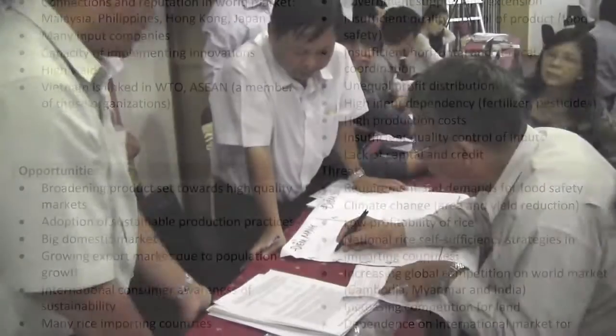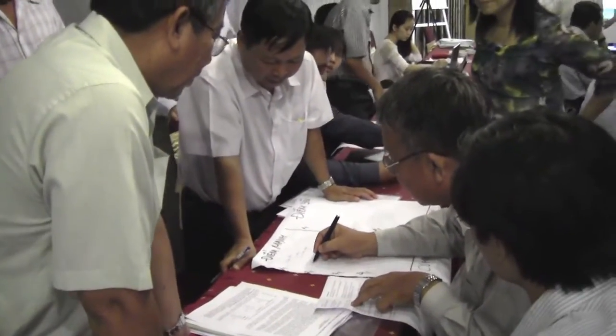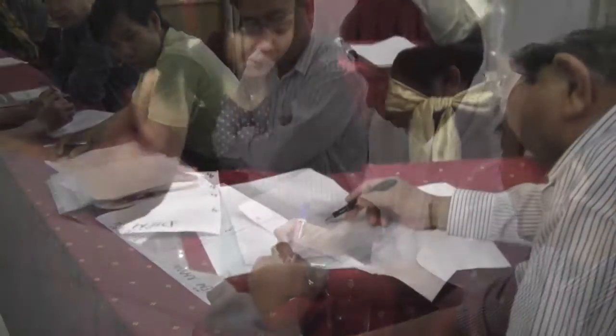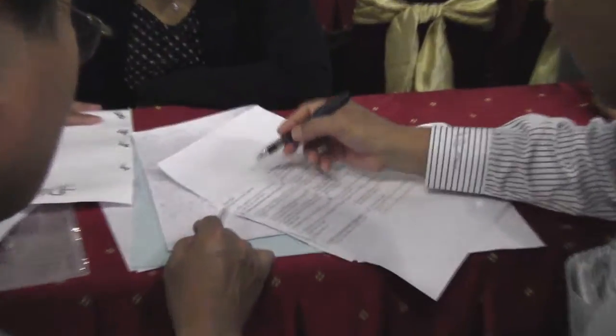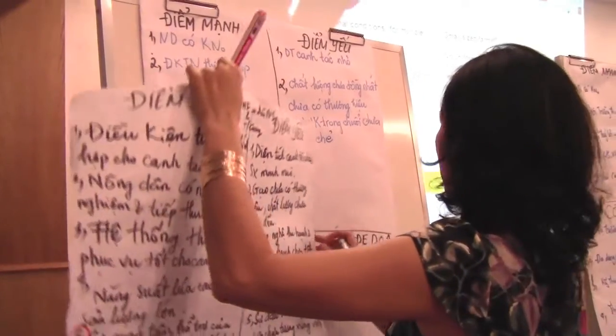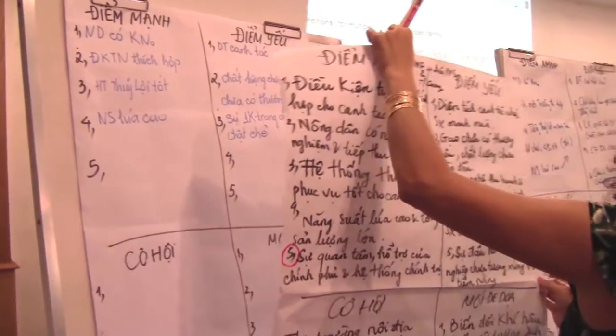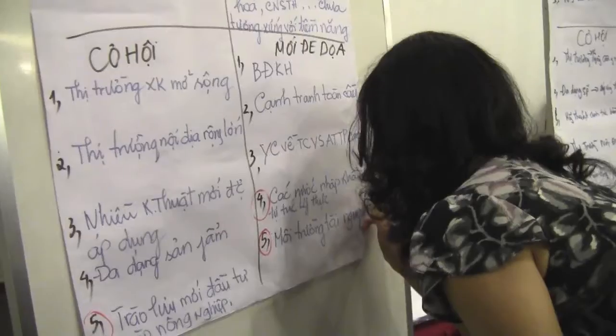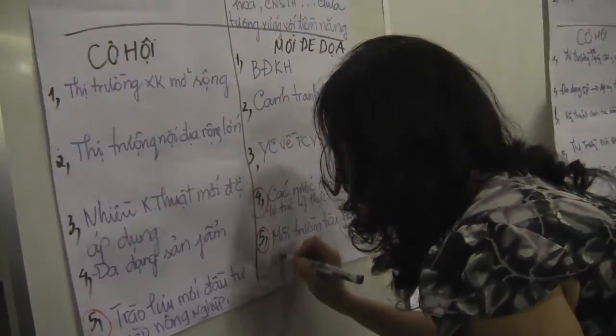From the full list, each group chooses five of what they decide are the most important strengths, weaknesses, opportunities, and threats. SWOT items that appear consistently across the groups' lists are automatically included in the final list. SWOT items that are different from the rest are discussed by group representatives. All the participants then decide whether to include these items in the final SWOT list.